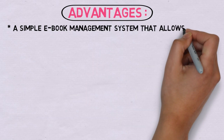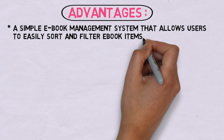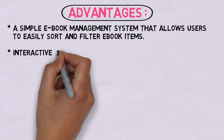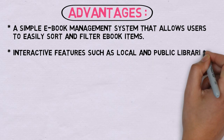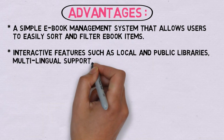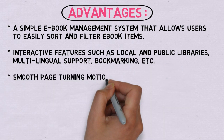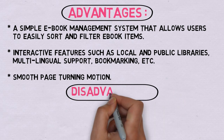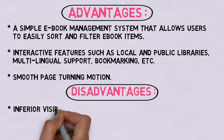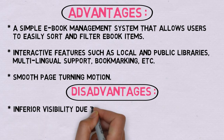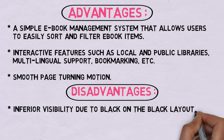Advantages: A simple ebook management system that allows users to easily sort and filter ebook items. Interactive features such as local and public libraries, multilingual support, bookmarking, etc. Smooth page turning motion. Disadvantages: Inferior visibility due to black on black layout. Missing ebook device features.